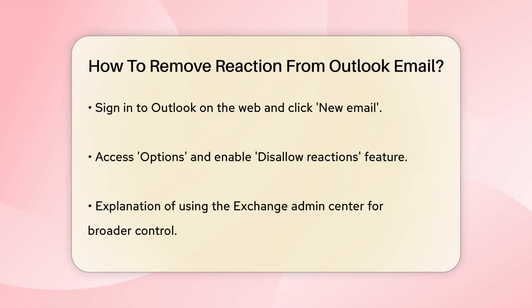For a more comprehensive solution, especially if you're managing an organization, you can use the Exchange Admin Center. Here, you can create a mail flow rule that adds a specific SMTP header to emails, which tells Outlook to disable reactions.